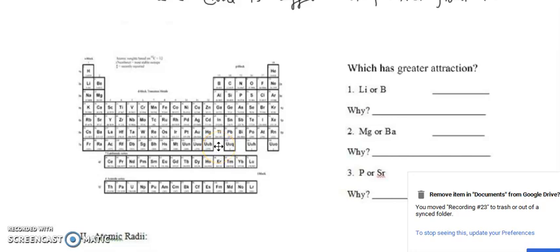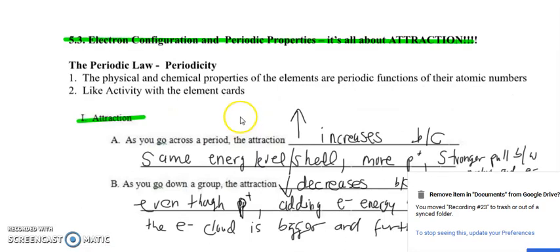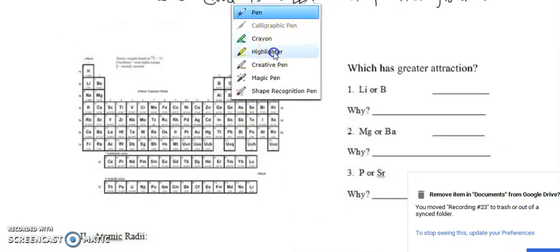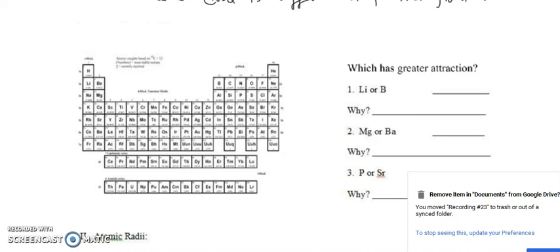Welcome back, all of my future chemists. We just learned previously that it's all about attraction. So let's highlight where there is the most attraction in the periodic table. The most attractive element is fluorine. The least attractive element is francium.